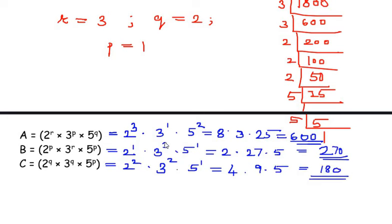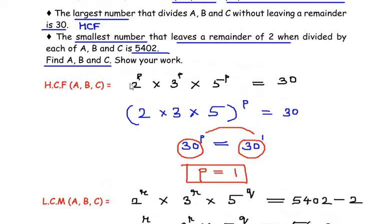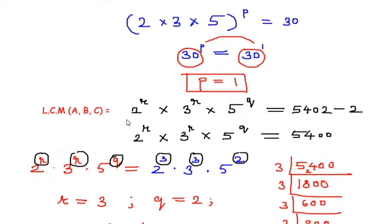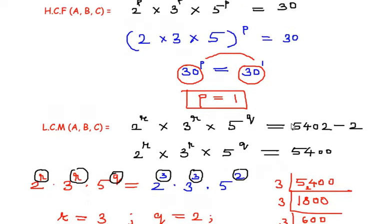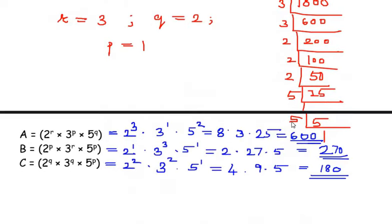So these are the values: a = 600, b = 270 and c = 180. We made use of the concept of HCF — taking the lowest powers of the prime factors — and LCM — taking the highest powers of the prime factors — to solve the question. I hope you understood all the steps. If you know any other way of solving this, do comment below. If you're liking my videos, please like, share and subscribe to my channel. Thank you for watching.